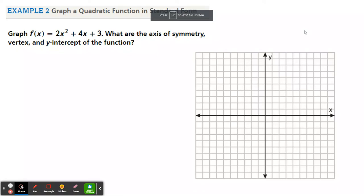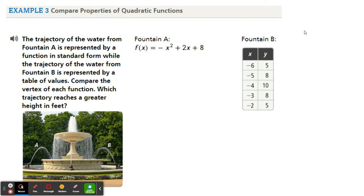Alright, video two about quadratics in standard form. I have a couple application questions for you. So it says the trajectory of the water from fountain A is represented by a function in standard form, while the trajectory of the water from fountain B is represented by a table of values.